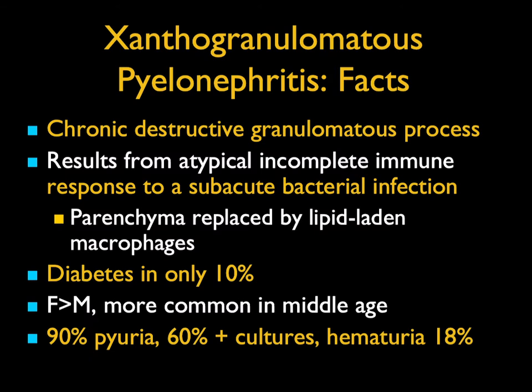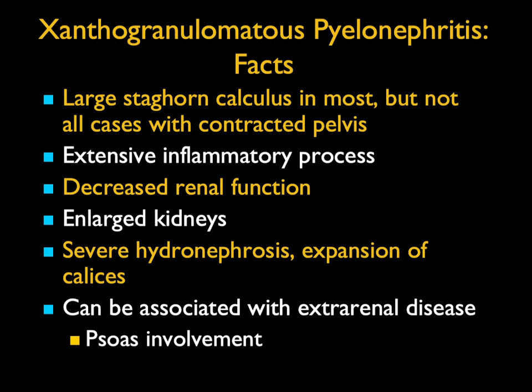XGP is a chronic destructive granulomatous process resulting from a typical incomplete immune response to a subacute bacterial infection. We often see this in poorly treated patients — nursing home patients, older patients who don't complain. Diabetes is under 10% of cases. It's more common in females and middle to older age patients. Pyuria, positive cultures, and hematuria are oral presentations. On imaging, a large central staghorn calculus is most common, with an extensive inflammatory process, dilated calyces, and often no renal function. It usually involves the entire kidney, typically unilateral, but can be more focal, involving only a portion.